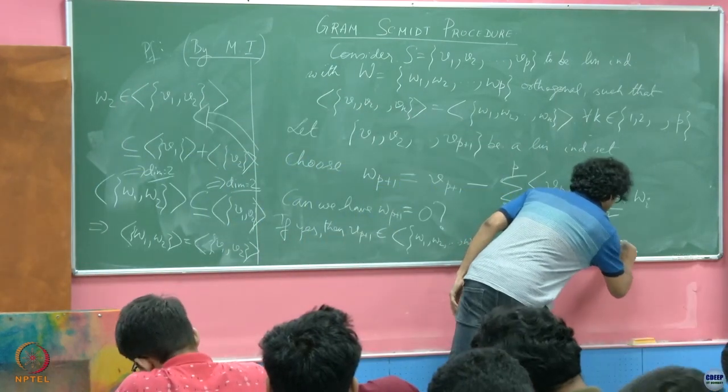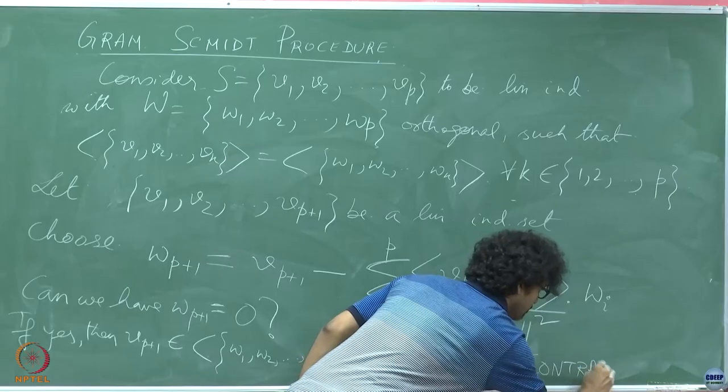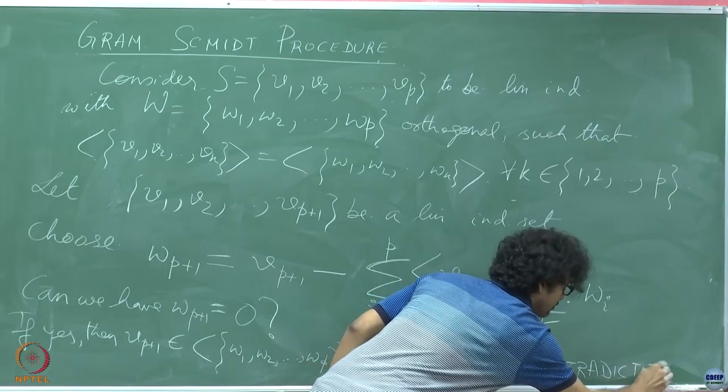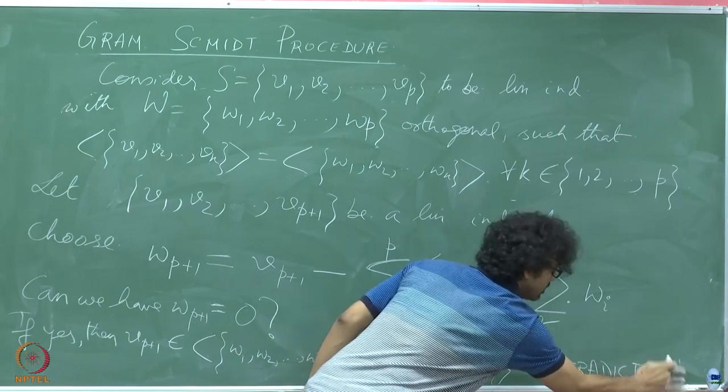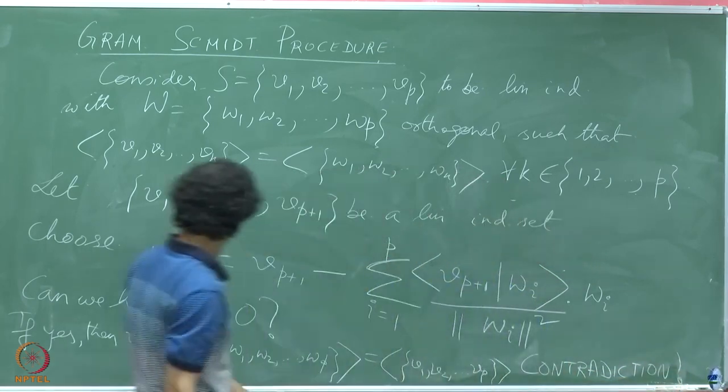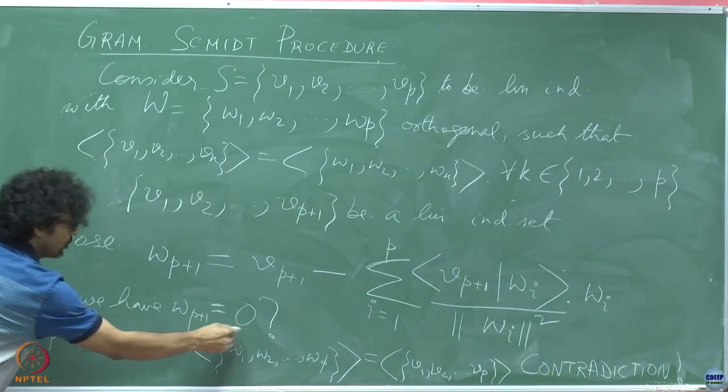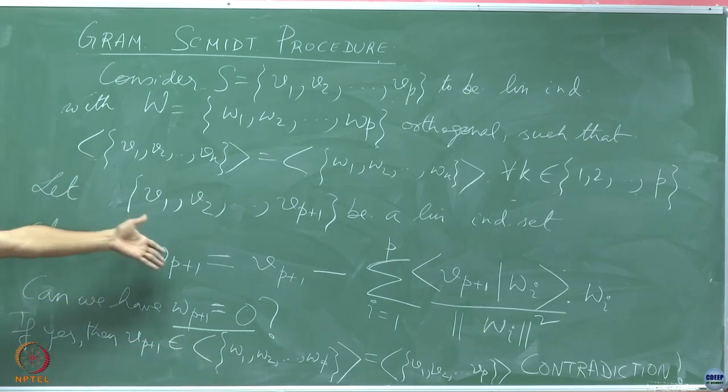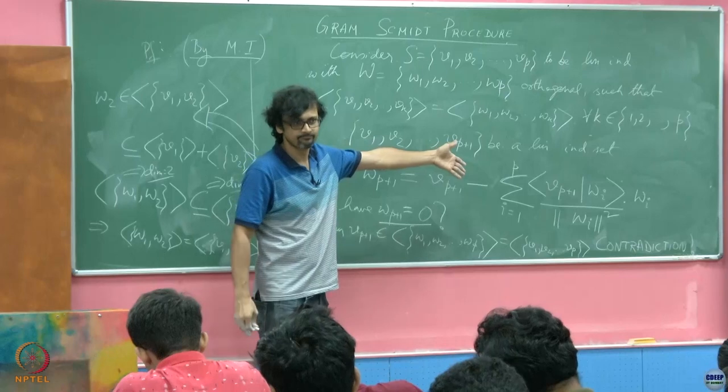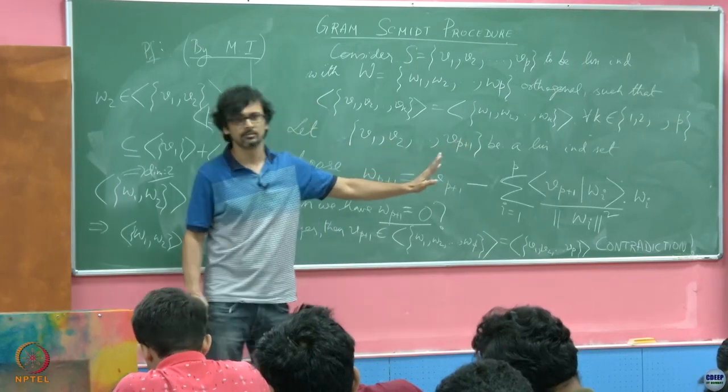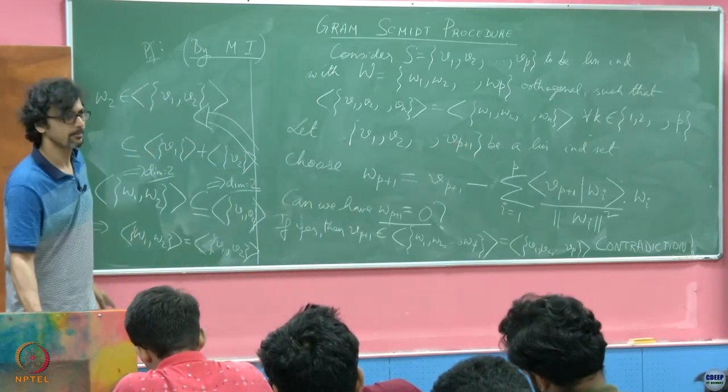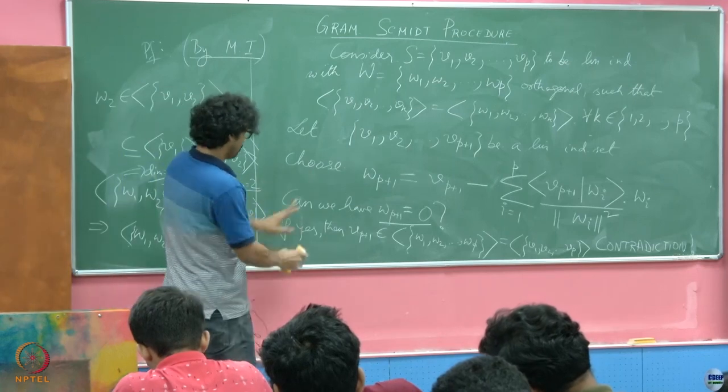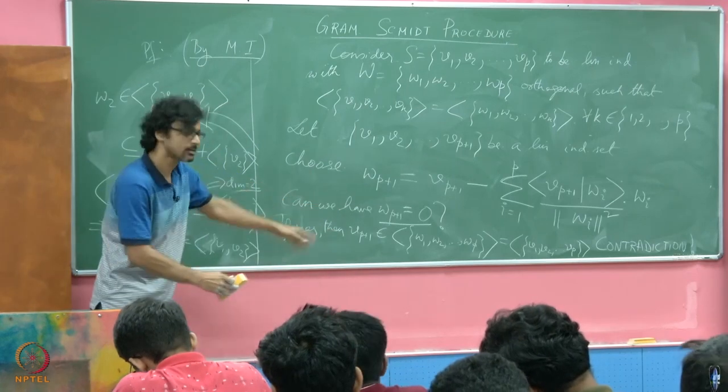So this is a contradiction, so we must have been mistaken when we suppose that this is 0. So clearly this fellow we are adding is a non-zero vector, at least that we are sure of. So this question is addressed, let us get rid of this then.